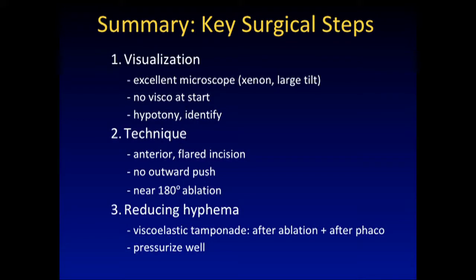In summary: get a good microscope — if you save on the microscope you will not get this to work, probably not any MIGS. Don't use viscoelastic — yes, you want to maintain the chamber, but not here. Induce hypotony, gape the wound, identify the meshwork with a gonio lens. The technique: make the incision anterior and flare it. During ablation, do not push outward — you will lose your collectors. Aim for 180 degrees — you should be in the 'club 180,' not just two clock hours. And finally, leave some viscoelastic behind to reduce hyphema and pressurize the eye. It's not dangerous, and it will help for a better outcome.